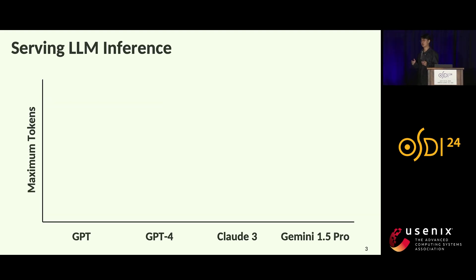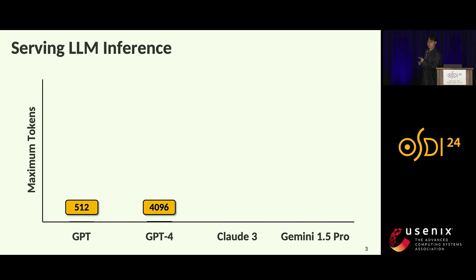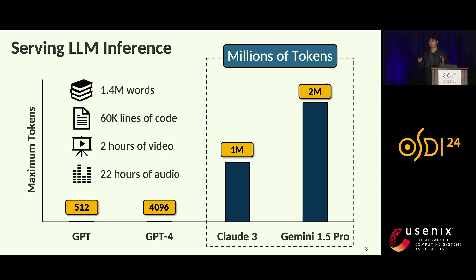Large language models have opened a new era across a wide range of real-world applications. LLMs are becoming more powerful by increasing the maximum number of tokens. For example, earlier GPT models could only process a limited number of tokens, whereas recent LLMs like Claude and Gemini can process millions of tokens, handling millions of words, thousands of lines of code, and hours of video and audio.